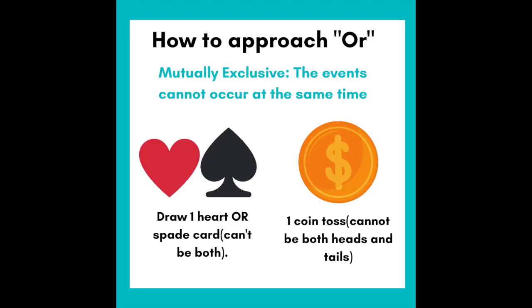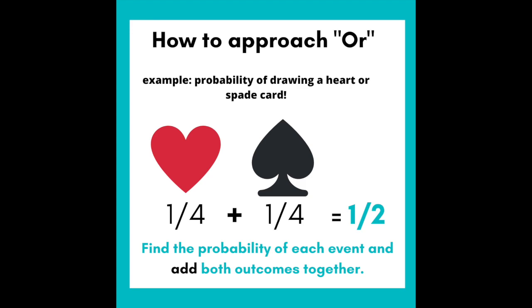With or, the events are mutually exclusive — they cannot occur at the same time. First, figure out the chance of each event happening, then add both outcomes together.